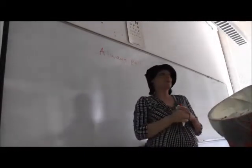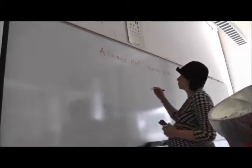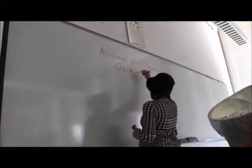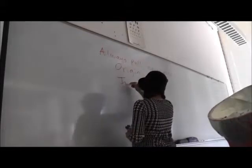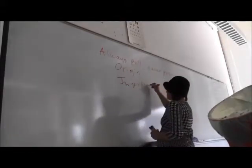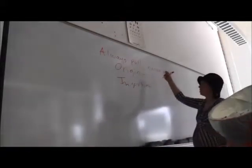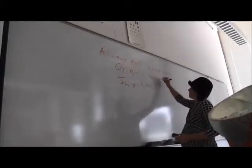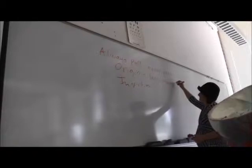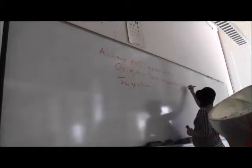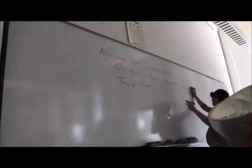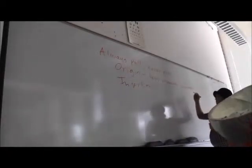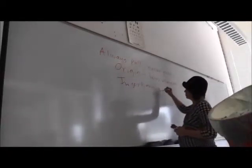Muscles have two attachment places: what's called an origin and an insertion. In general, our origin is the less movable attachment. And when the muscle contracts, we're going to pull the insertion toward the origin. Our insertion, then, is our more movable attachment.